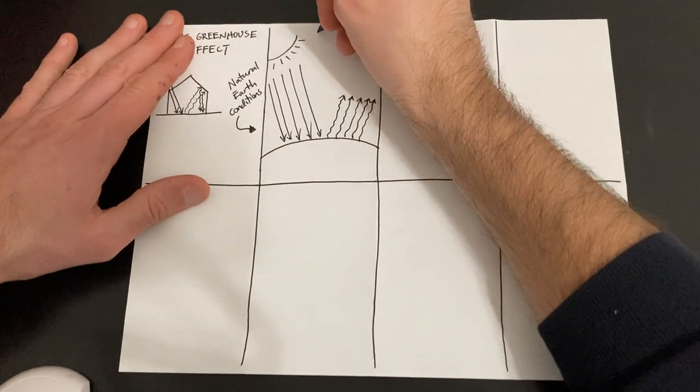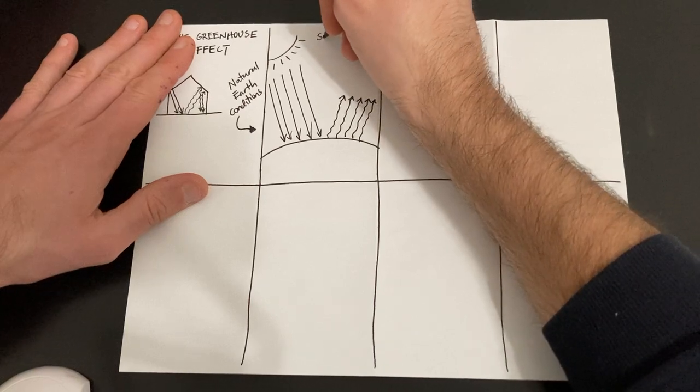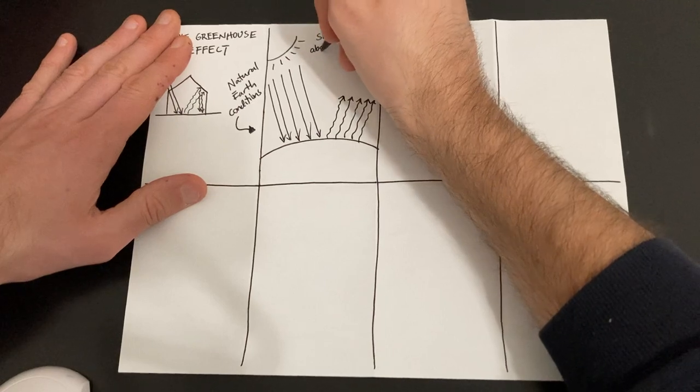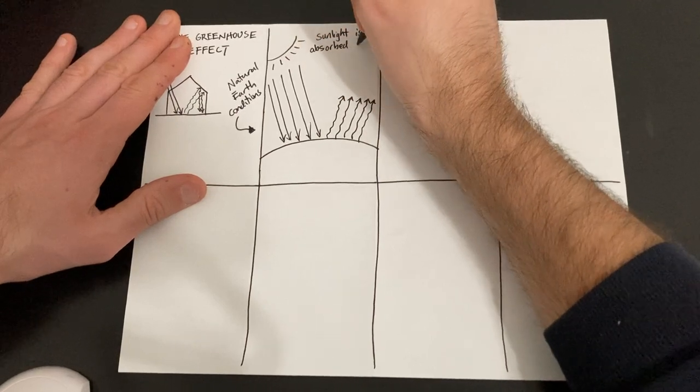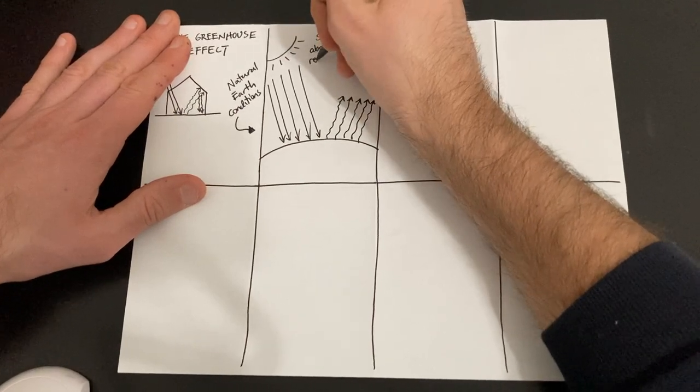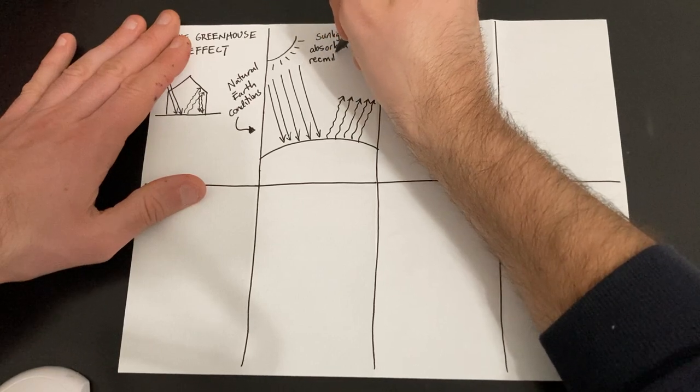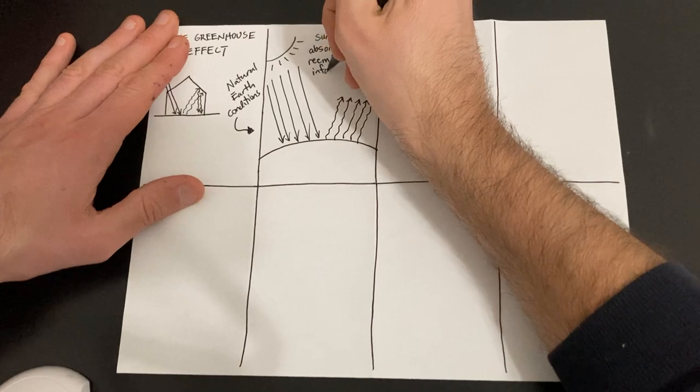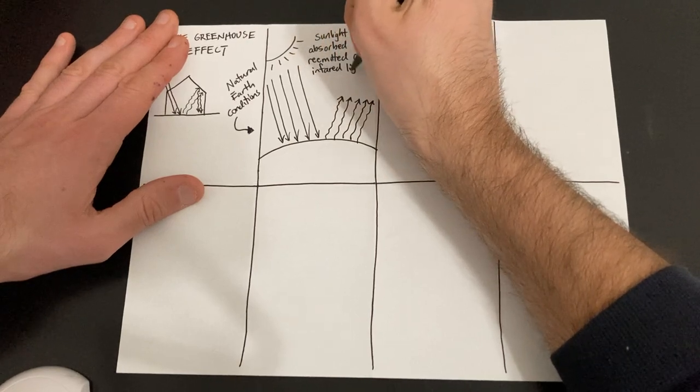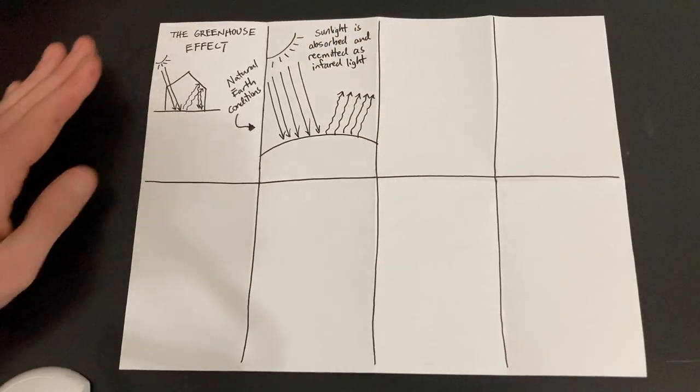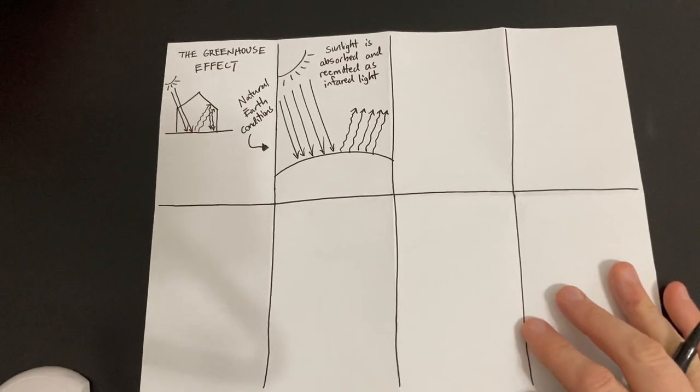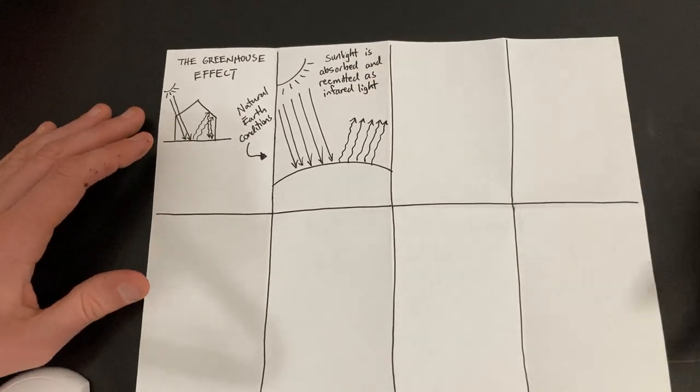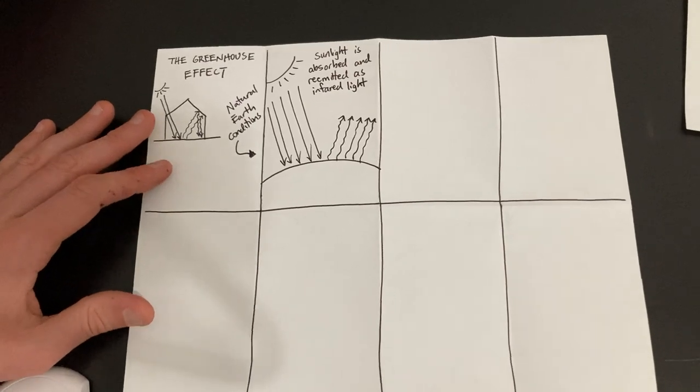And I might even write a caption. Sunlight is absorbed and re-emitted as infrared light. So infrared light is just like visible light. The thing is, we just can't see it. But we could think of this as heat. So it's there. We just can't see it.